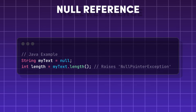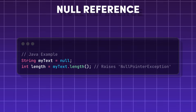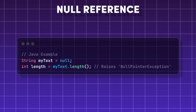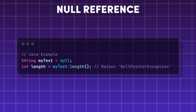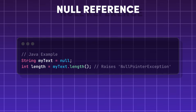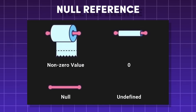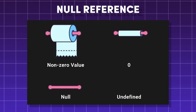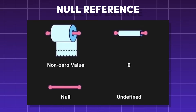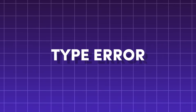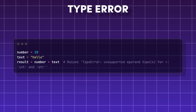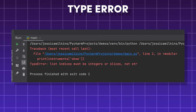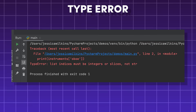Null reference — trying to use a variable that points to nothing. Depending on the programming language, this can be a null, none, or undefined value. Type error — trying to do something with incompatible data types, like trying to do addition with a string and an integer.